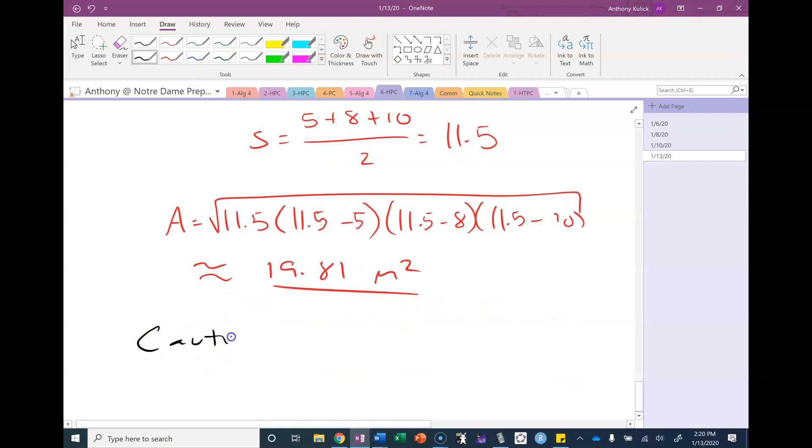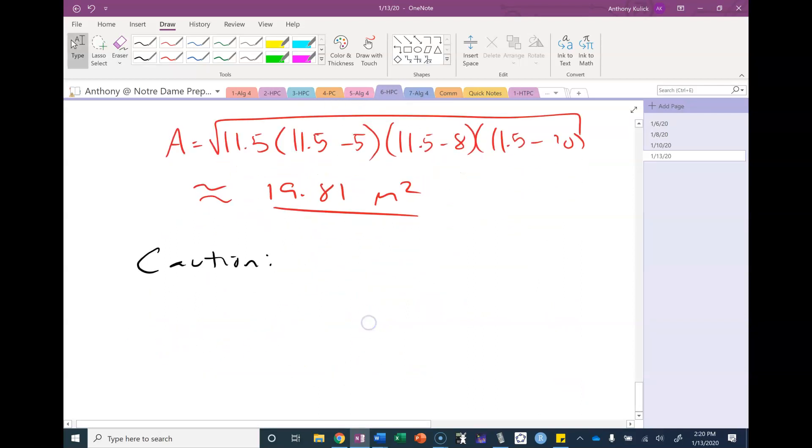A word of caution. There's three other situations that we have not talked about. If you want to find the area and I'm given like an angle side angle or an angle angle side or a side side angle, these are all situations where we might have to use the law of sines or cosines to find another side or angle first then use the area formula.